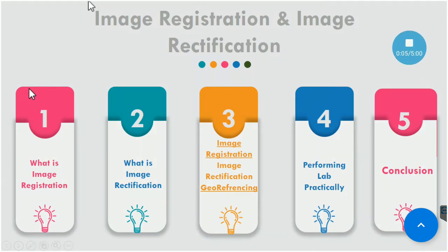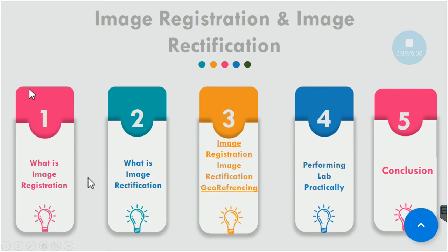Our today's lab is about image registration and image rectification. We will follow our timeline: what is image registration, what is image rectification, and what is the basic difference between image registration, image rectification, and georeferencing. Image registration is very simple — if you align an image based on another image, that is called image registration. It is basically an image-to-image alignment, or image-to-image georeferencing, or image-to-image geomatching.